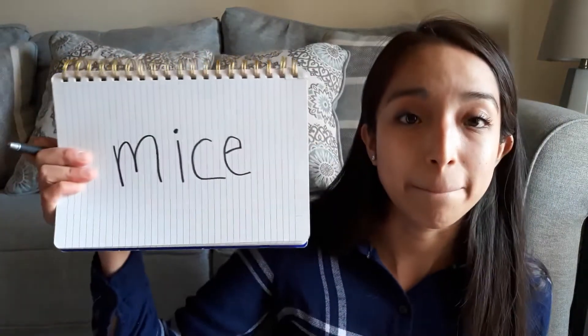Now let's try this one on our own. Say oak. Now add a J sound at the beginning of oak — we have joke. Now say ice. If we add the MMM sound at the beginning of ice, what do we have? We should have mice.